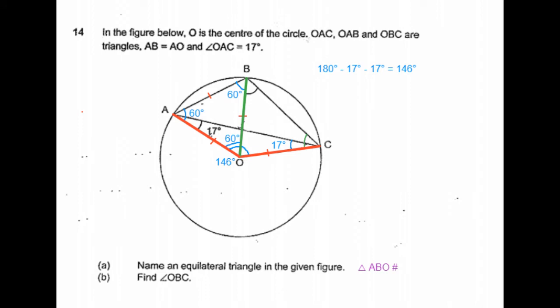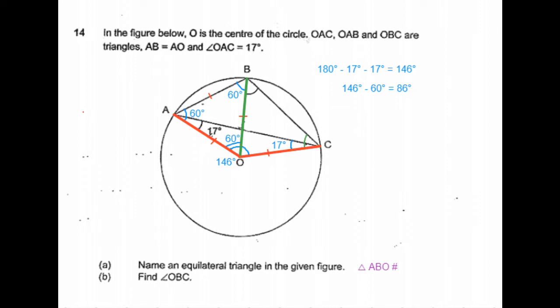Now consider the angle OAC, which is 146 degrees, and part of the angle OAB, we know it to be equal to 60 degrees because it's part of the equilateral triangle. So the other angle is 146 degrees minus 60 degrees is 86 degrees. So let's mark that as well.